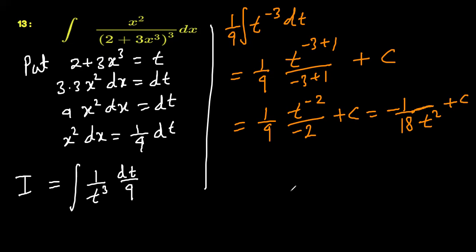Now we can retain the value of t and can write our answer as negative 1 over 18 times, this is 2 plus 3x³ whole square. So this will be the answer.